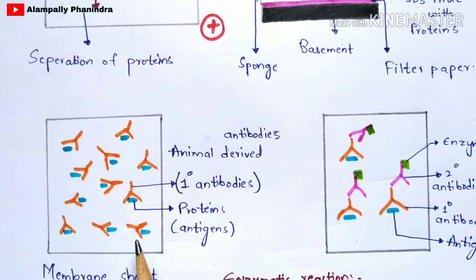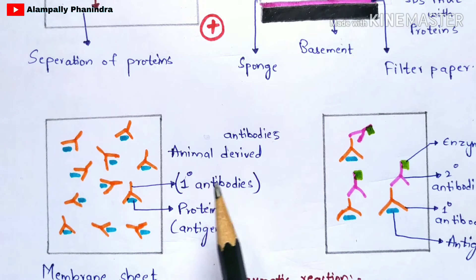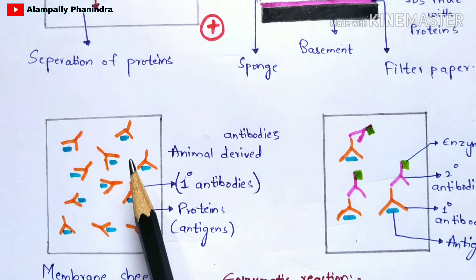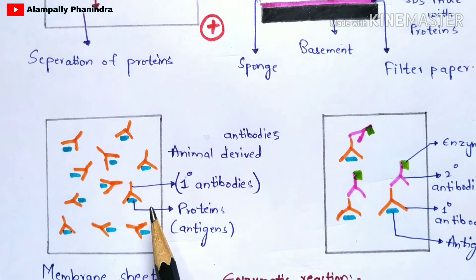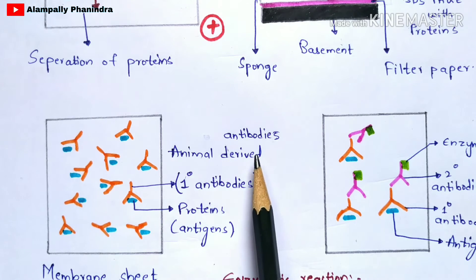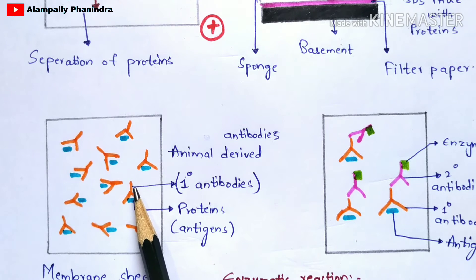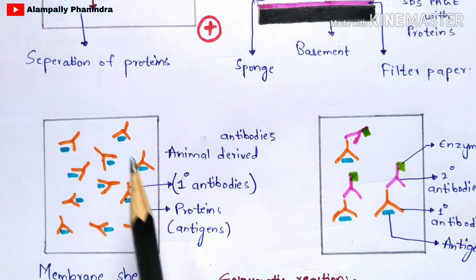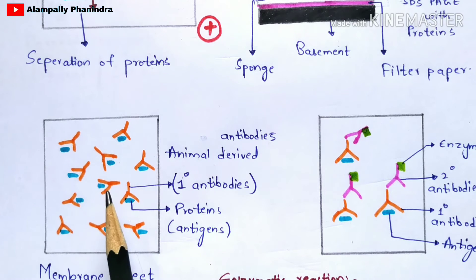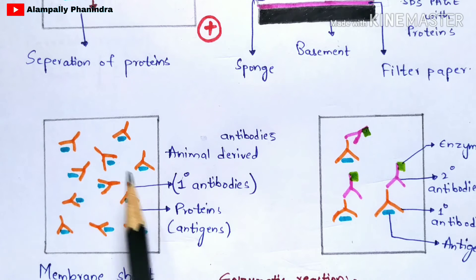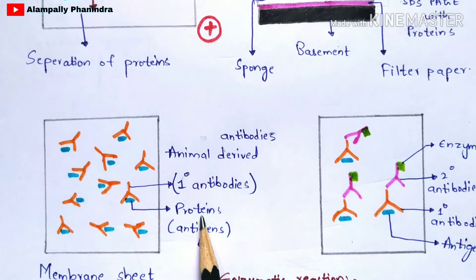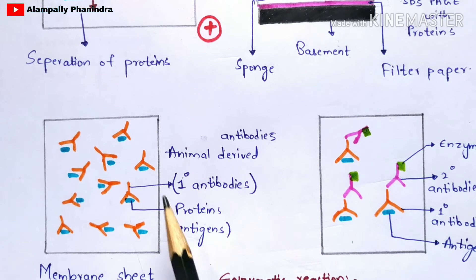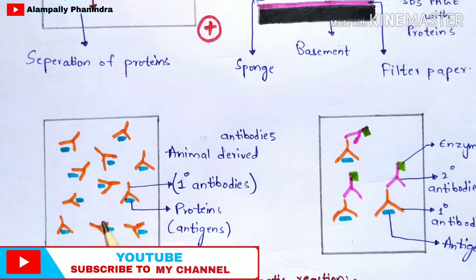In the third step, you add antibodies to the proteins on the membrane sheet. These are animal-derived antibodies, also called primary antibodies. The proteins on the membrane act as antigens. Once you add the primary antibodies, they start interacting with the antigens and form antigen-antibody complexes throughout the membrane sheet. This antigen-antibody complex formation is the third step.